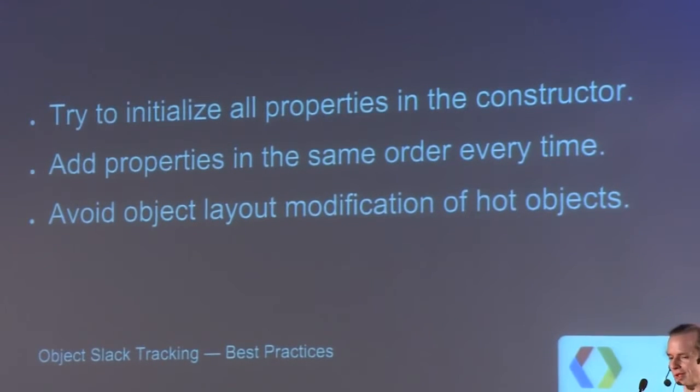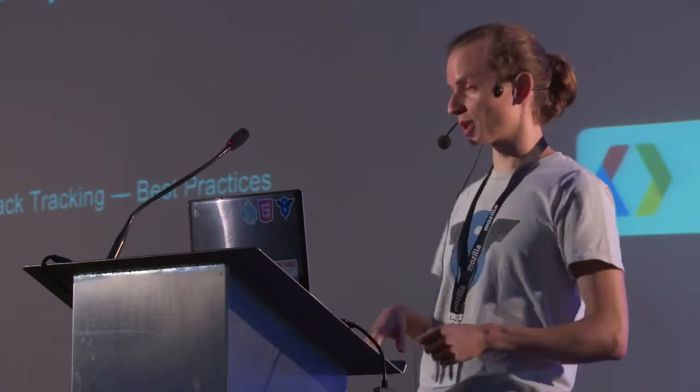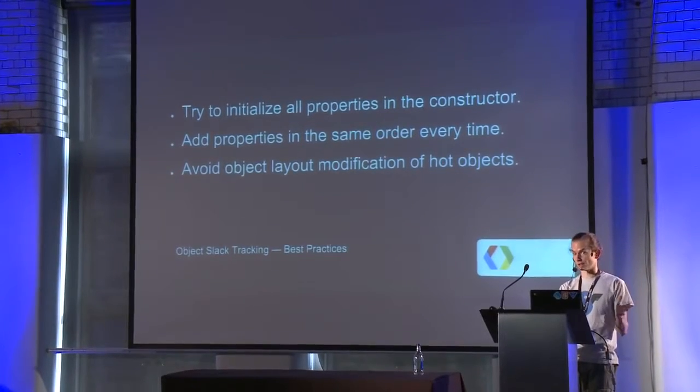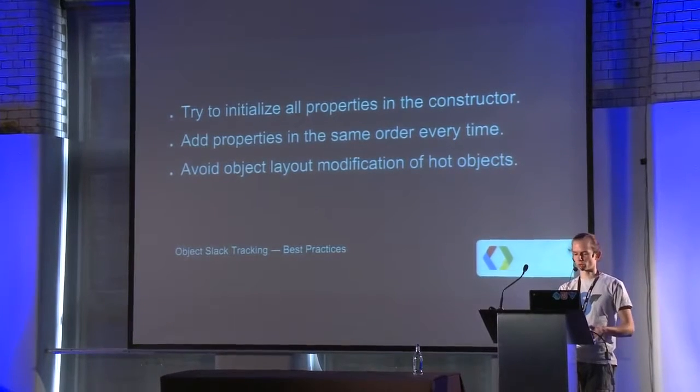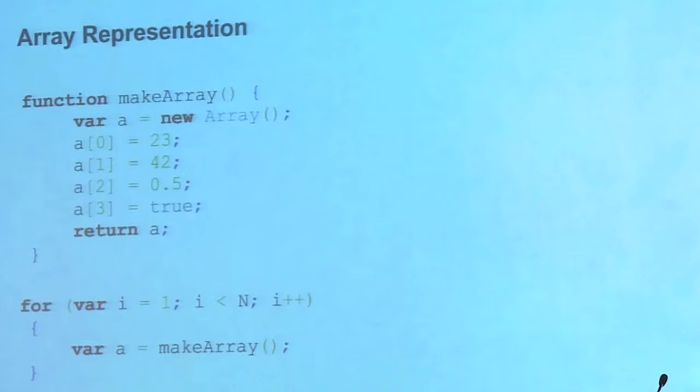So, if all of that doesn't interest you at all, you should just, you should at least take away some best practices. Or, think about what I just told you and be sure to only break these best practices if you know what you are doing. So, one thing, try to initialize all properties in the constructor. That helps V8 immensely to figure out how objects actually look like in memory. Add properties in the same order so that we can keep a sane hierarchy of hidden classes. And avoid object layout modifications after the fact. So, all of this only matters if you are dealing with hot objects. That means if you are either allocating lots of them or using them in a hot function.